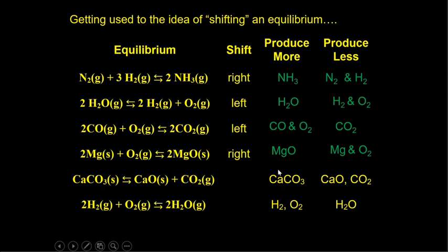In this next reaction, to get the equilibrium to produce more calcium carbonate, we need something that will cause the equilibrium to shift left. Similarly, if you want to produce more hydrogen and oxygen in the next reaction, you would also shift that reaction to the left. We'll need to figure out what stresses can cause a shift in equilibrium one way or another.